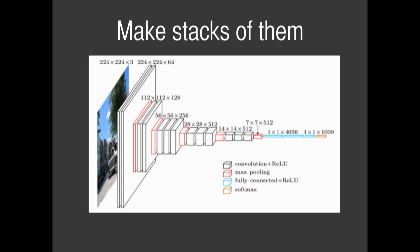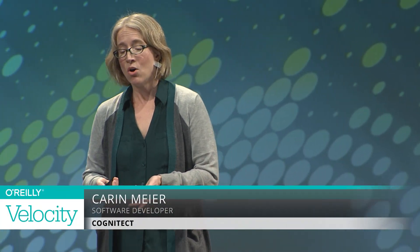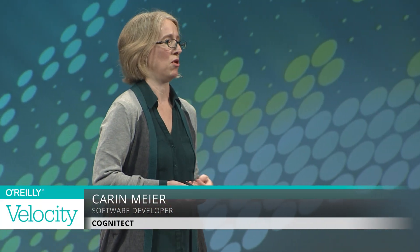The thing about neural networks now is that with deep learning, you can make stacks of them. This is actually an architecture for something called the VGG16 architecture — different layers. Now with GPUs, we can glue these all together and they can do some pretty amazing things. They can recognize images — you can tell the difference between cats and dogs, or maybe do something a little more interesting, like drive cars.